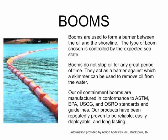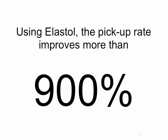Traditionally, booms have been considered the first line of defense. Booms are used to form a barrier between the oil and the shoreline. The type of boom used is controlled by the anticipated sea state. It is important to realize that booms do not stop oil for any great length of time. Elastal enhances boom containment in open water. A skimmer or vacuum hose must be used to physically remove the oil that is blocked by the boom. With the addition of Elastal, the pickup rate improves by more than 900%.